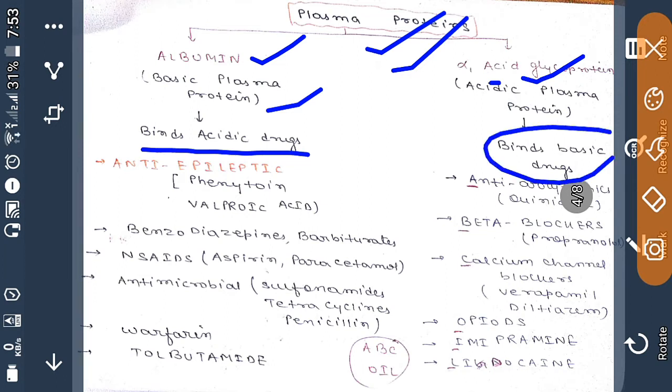Examples of drugs binding with albumin: all antiepileptic drugs such as phenytoin, valproic acid will bind to albumin along with benzodiazepines, barbiturates, all nonsteroidal anti-inflammatory drugs such as aspirin, paracetamol.